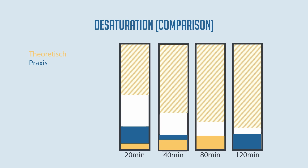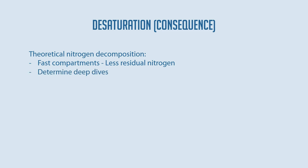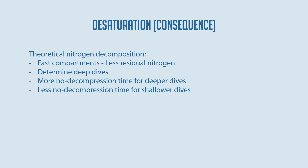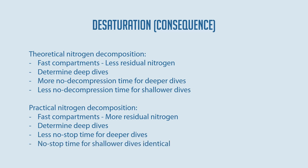The slower compartments are identical in both assumptions; the faster ones show significant differences. What does this mean? Theoretically, the faster compartments have less residual nitrogen, and since these determine deep dives, dive computers using the theoretical model give us more no-stop time for deep dives and less for shallow dives — a contradiction. In practice, the faster compartments have higher residual nitrogen content, so we have less no-stop time for deep dives, whereas the no-decompression time for shallower dives remains the same. That sounds more realistic, doesn't it?